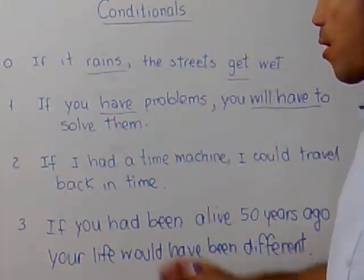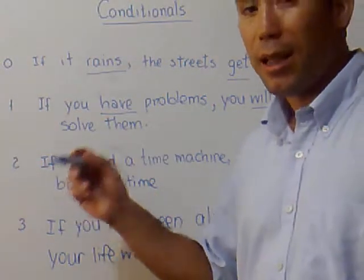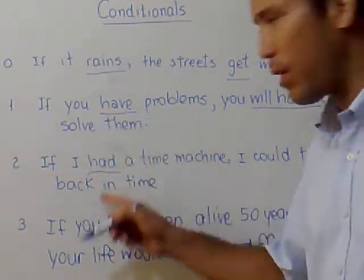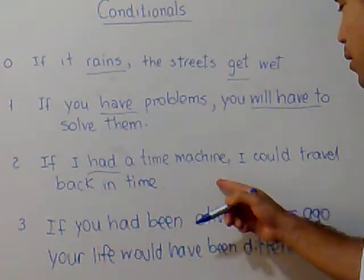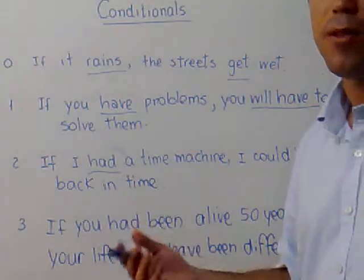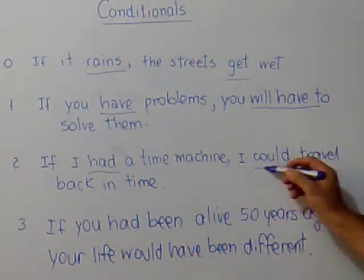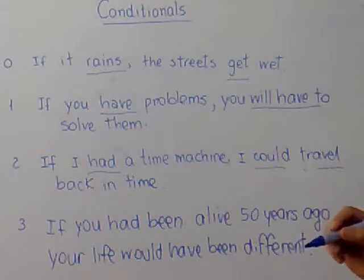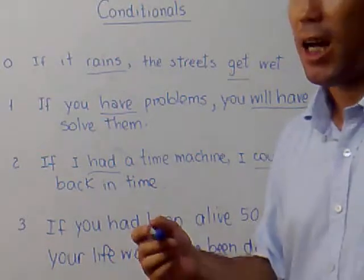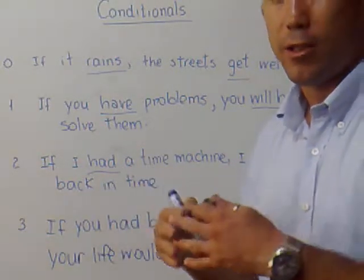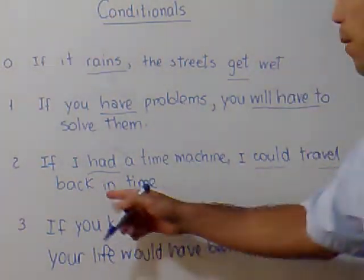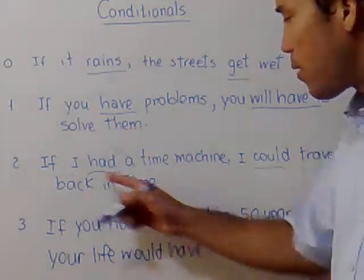The second conditional is called the present unreal conditional, because even though the verb in the condition clause is in past, it refers to the present. For example, 'if I had a time machine' means that I don't have a time machine; 'I could travel back in time' is something I can't do. I use a modal and the verb in the present tense. This is unreal and the meaning is just the opposite — 'if I had a time machine' means I don't have one, and 'I could travel back in time' means I can't.